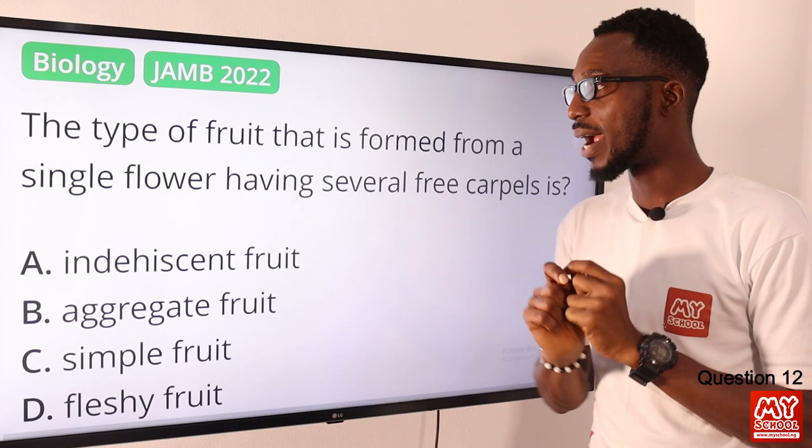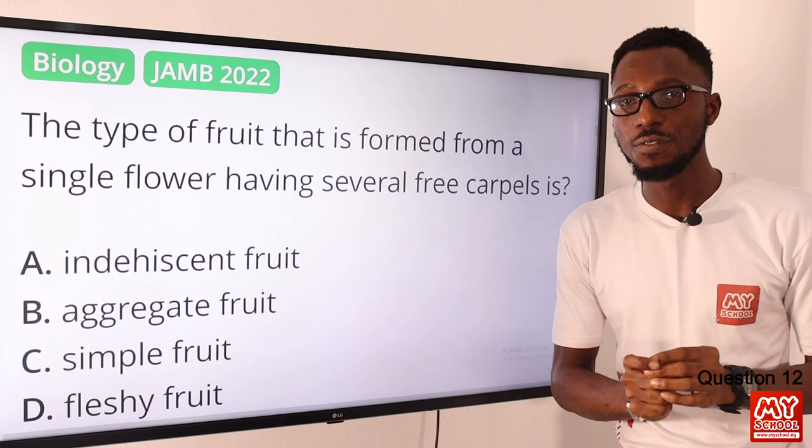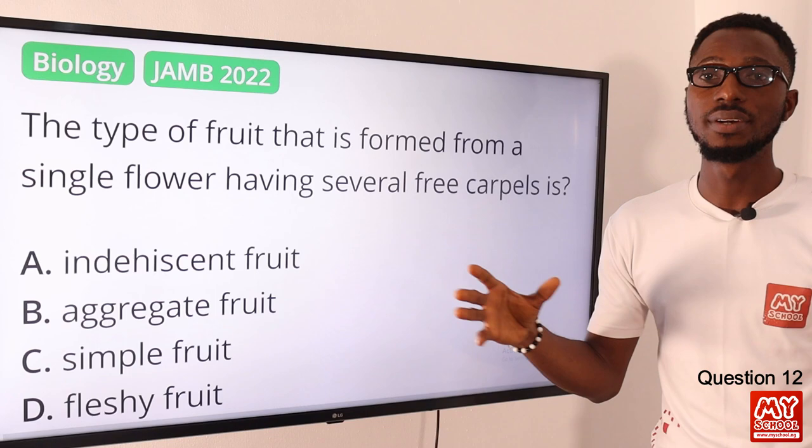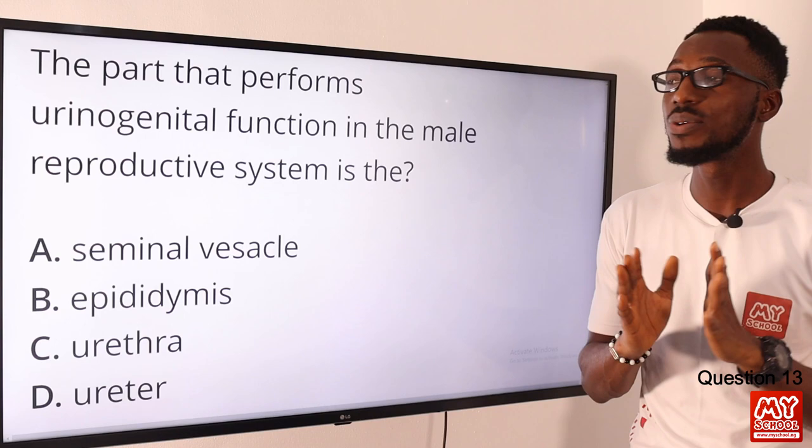Question twelve: the type of fruit formed from a single flower having several free carpels is what? A simple fruit comes from a single ovary. The type described here is an aggregate fruit. The correct option is option B — aggregate fruits.